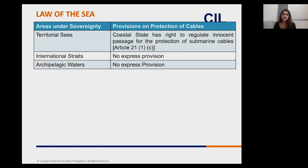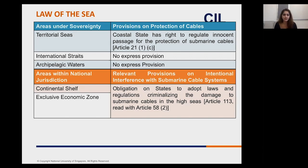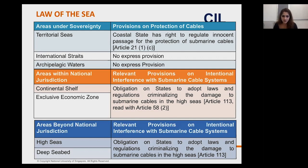There are very few provisions on the protection of cables in areas under sovereignty. There is one provision in relation to the territorial sea: the coastal state has the right to regulate innocent passage for the protection of submarine cables — a right, not an obligation. International straits and archipelagic waters contain no provisions. It is within the competence of the coastal state to take protective measures, but state practice has reflected that they have not done so.